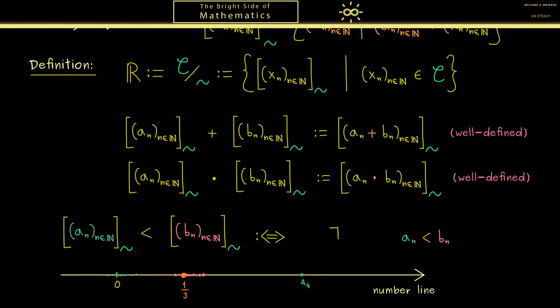Therefore, we would write there exists a capital N such that for all indices greater than capital N, we have aₙ is less than bₙ. This now looks better, but it is still not correct.